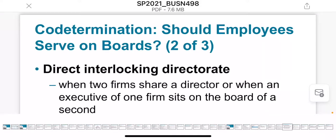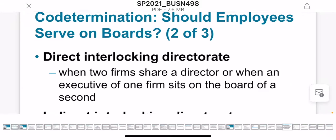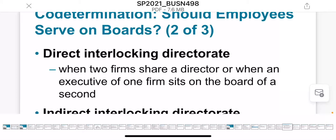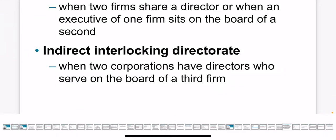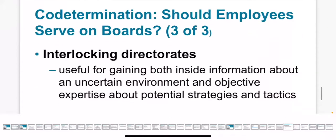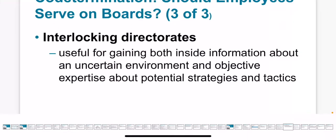For co-determination there are a few types. The first is direct interlocking directorate, which is when two firms share the same directors — for example, one person can be a director for two different companies. The indirect interlocking directorate is when two companies share the same directors, but those directors also work with a third company unrelated to the first two. Interlocking directorates are useful because the company can use the directors' knowledge and experience to respond to environmental change.